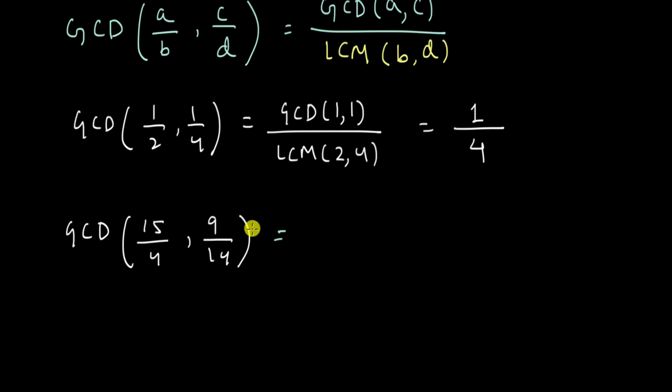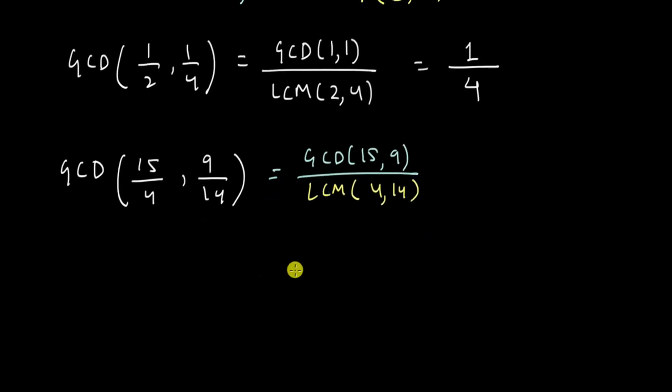Okay, hopefully you have tried this. So this will be equal to the GCD of 15 and 9 divided by the LCM of 4 and 14. Okay, so what does this give me? GCD of 15 and 9. This divides by 3. This also divides by 3. Is there any other common divisor?